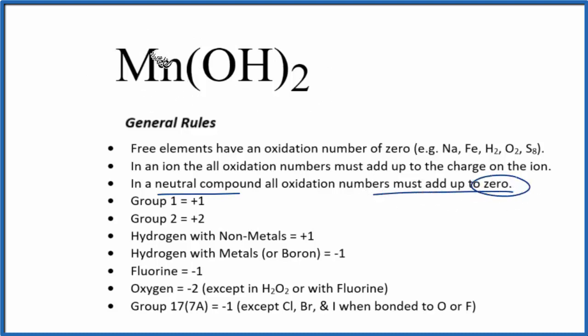For the manganese, this is a transition element. It can have multiple oxidation states. It really depends what it's bonded to. When we look at this OH, we should be able to recognize that this is a hydroxide. This is the hydroxide ion here.